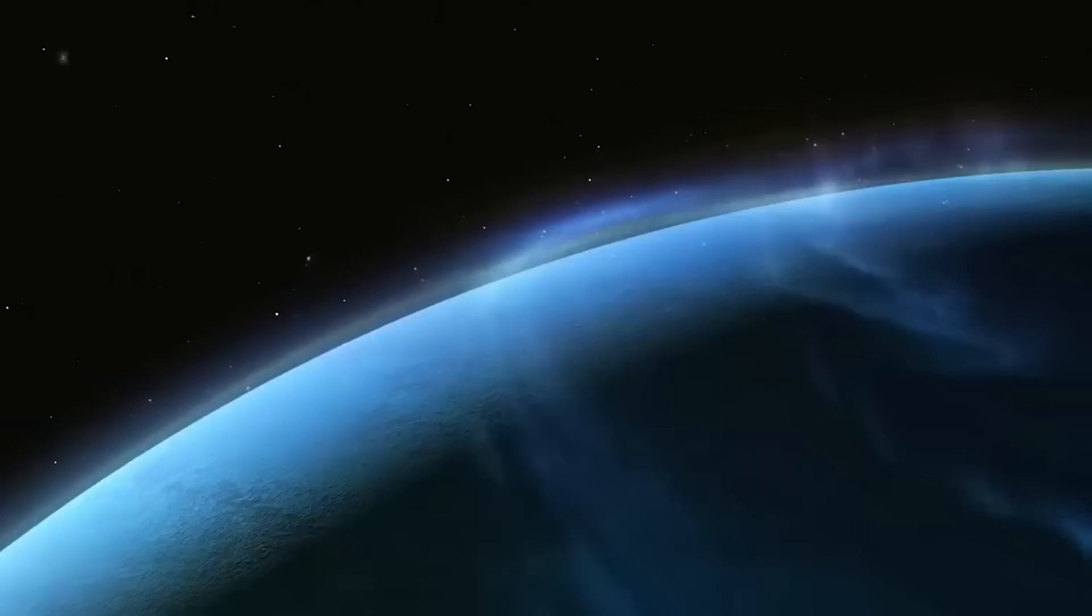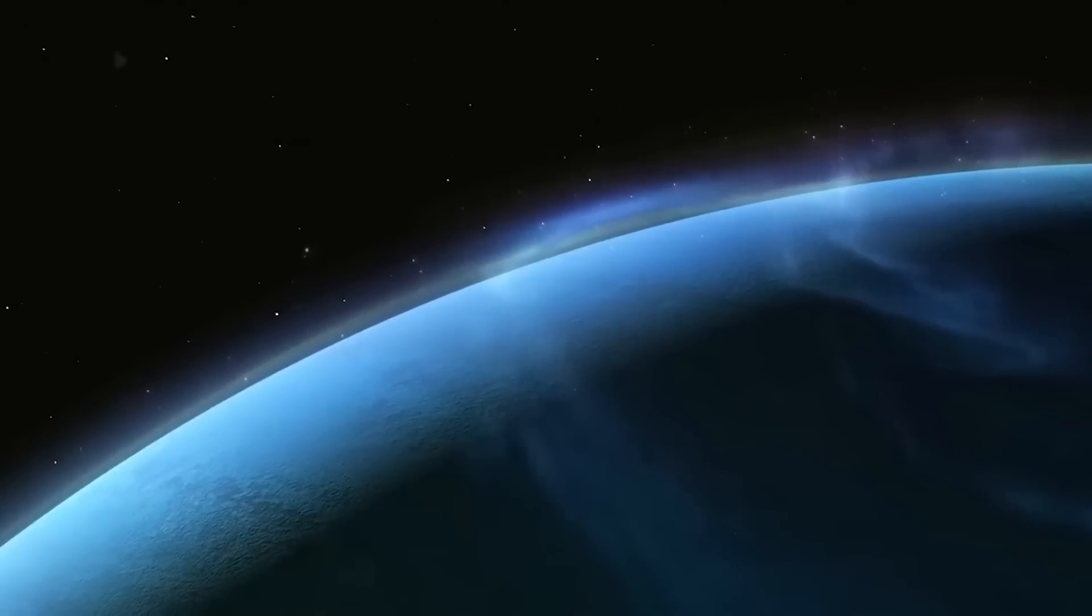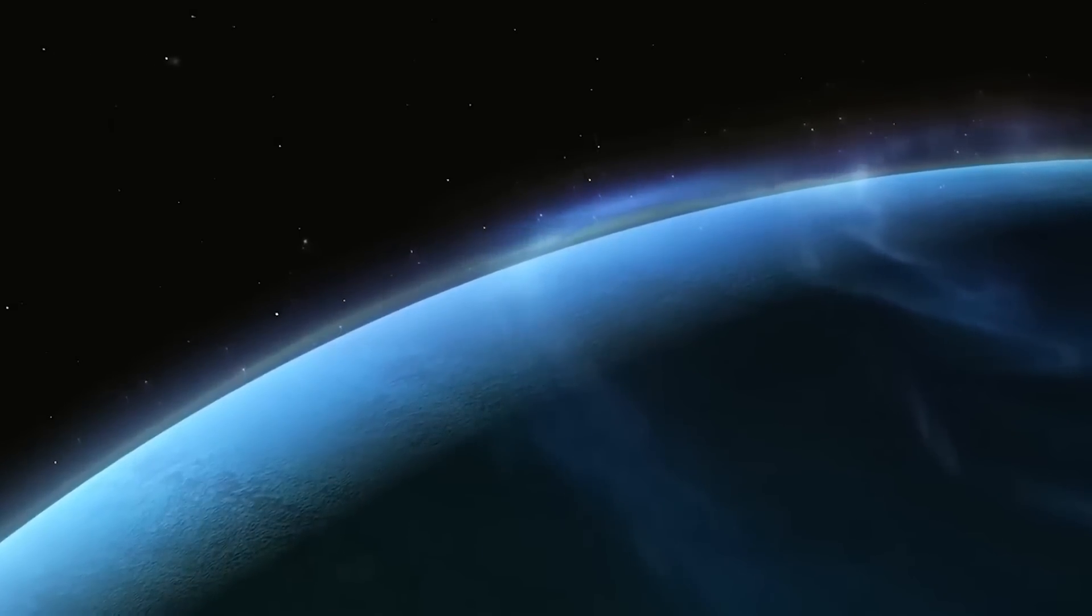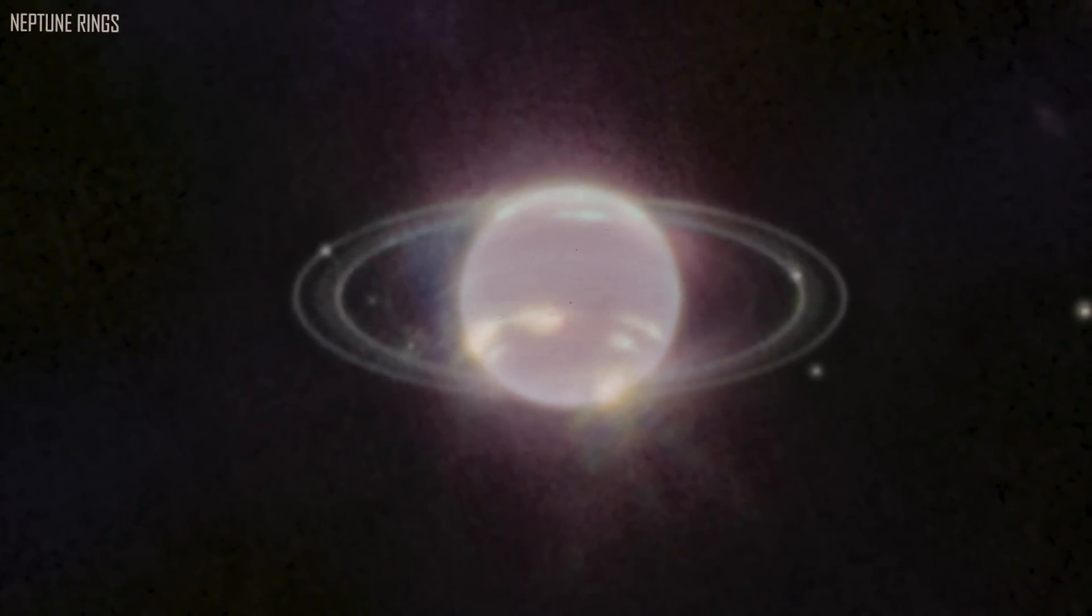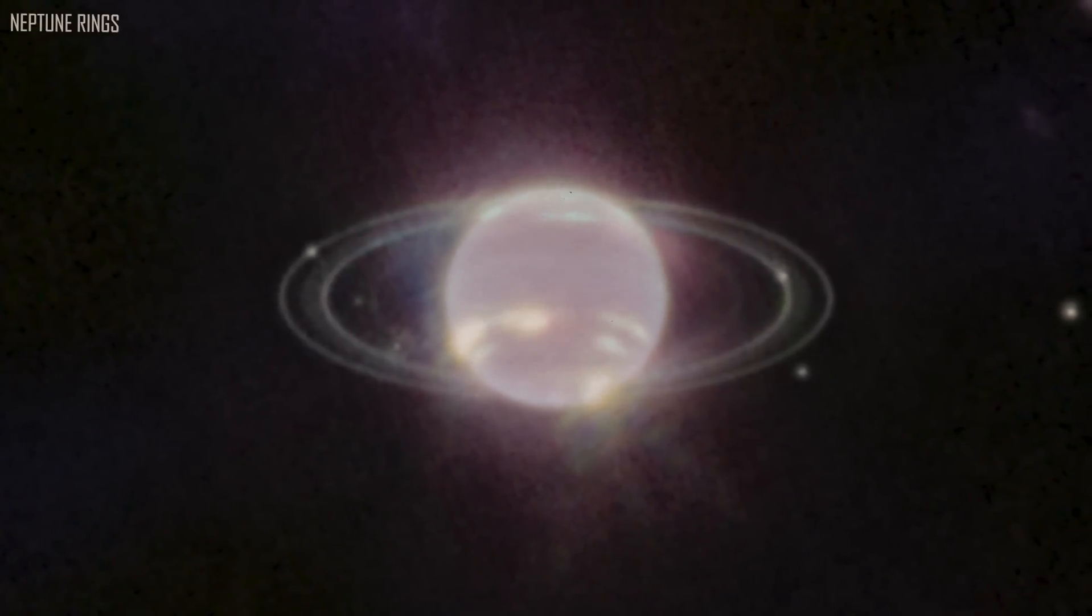The planet that is farthest from the Sun is Neptune. It is approximately 30 times farther away from Earth. Neptune's temperature is typically minus 200 degrees Celsius. It is the only planet that we cannot view from Earth without the aid of a telescope since it is so far away.